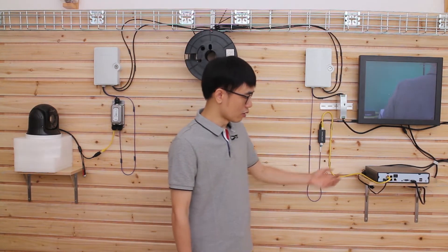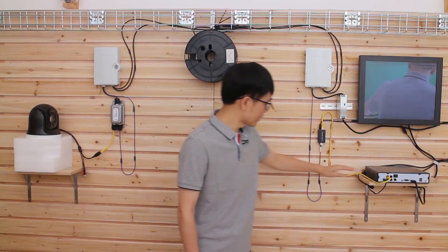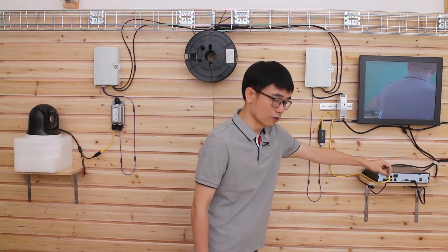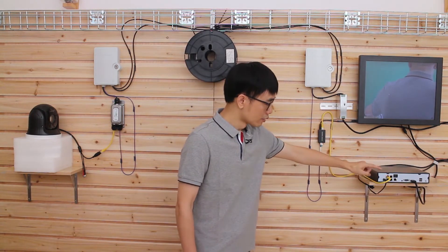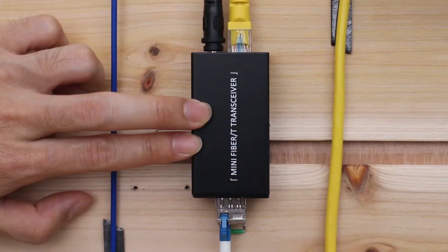First, let's take a look at the whole system. This is the PoE NVR with 4 PoE ports. We cannot connect fiber optic cable directly to these ports—they only take Cat5e or Cat6 Ethernet cable. So we're using a short patch cord to link one of these ports to this media converter.